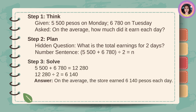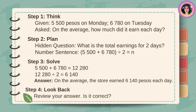Step 3 - Solve. P5,500 plus P6,780 is equal to P12,280. P12,280 divided by 2 is equal to P6,140. On the average, the store earned P6,140 each day.